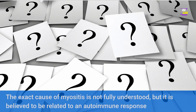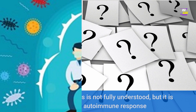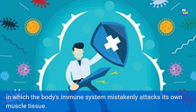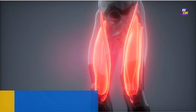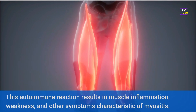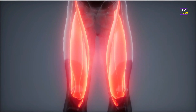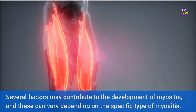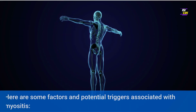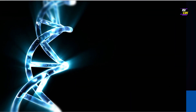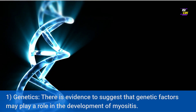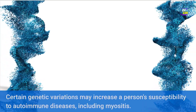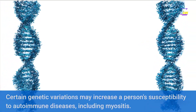The exact cause of myositis is not fully understood, but it is believed to be related to an autoimmune response in which the body's immune system mistakenly attacks its own muscle tissue, resulting in muscle inflammation, weakness, and other characteristic symptoms. Several factors may contribute to the development of myositis. 1. Genetics — there is evidence that genetic factors may play a role, and certain genetic variations may increase a person's susceptibility to autoimmune diseases including myositis.